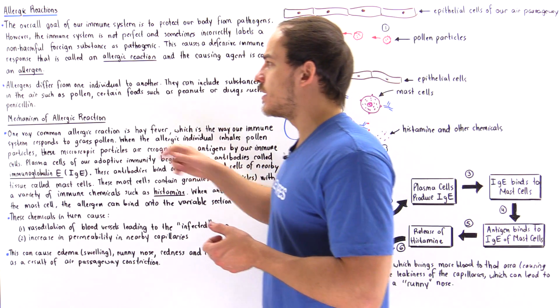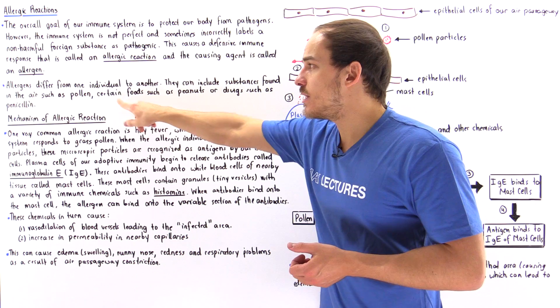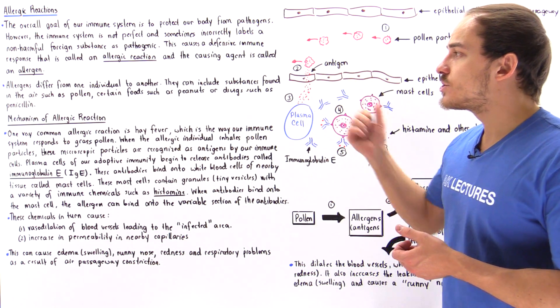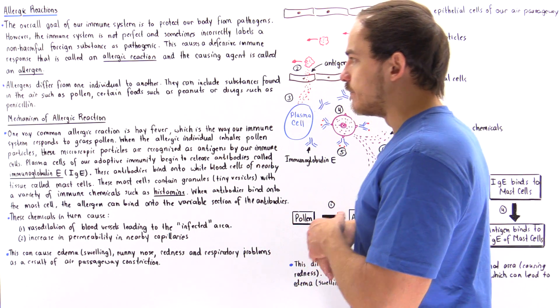People are generally allergic to certain foods or drugs or certain things found in our environment. For example, people can be allergic to pollen found in grass or flowers. They can be allergic to certain foods such as peanuts or certain drugs such as penicillin.